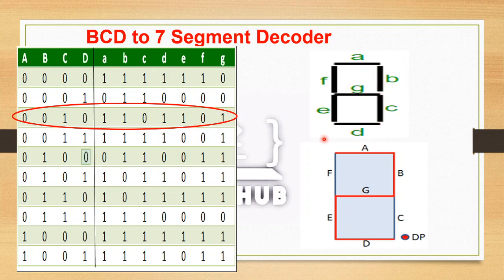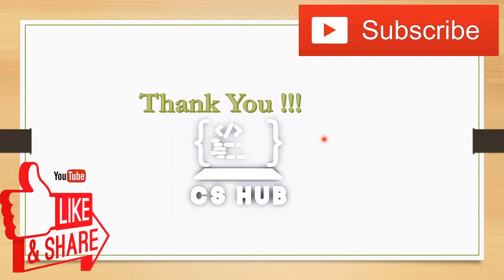To summarize, we have discussed the types of decoders including the 2-to-4 line decoder, 3-to-8 line decoder, and the BCD to 7-segment decoder. I hope the concept is clear. We will see you in the next video.